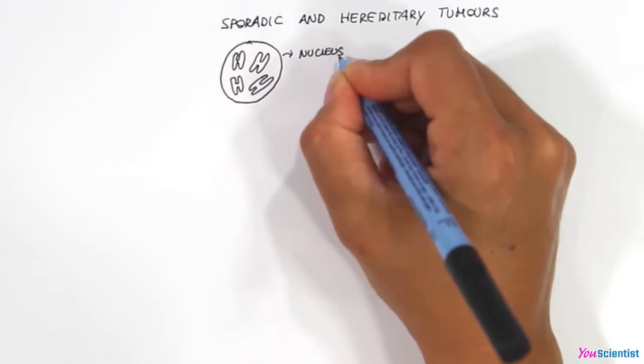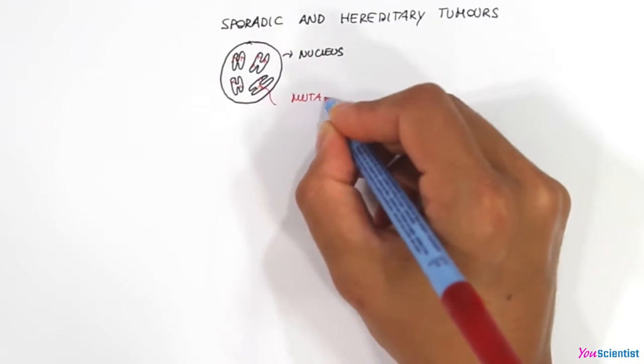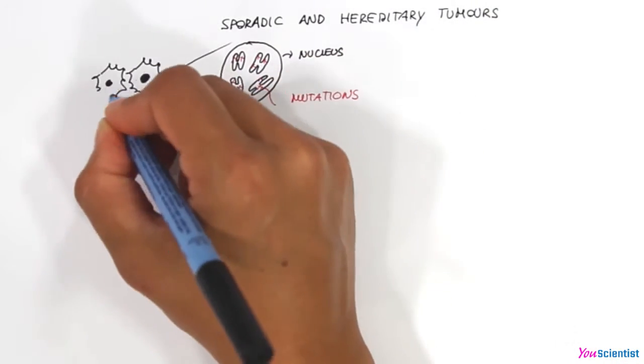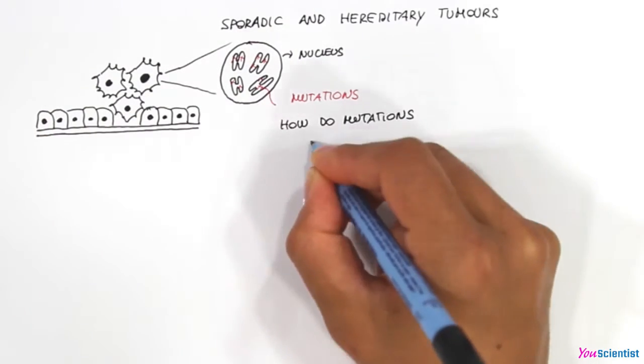Tumors are caused by mutations which are alterations in the DNA sequence of a cell. These modifications alter normal cellular programs. How do mutations occur?